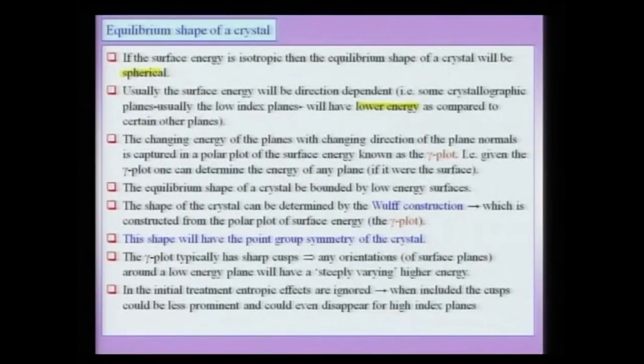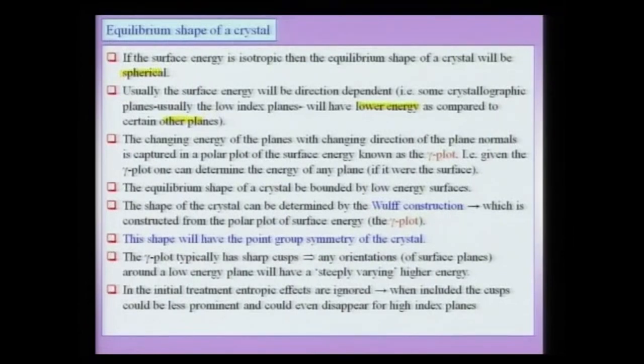To obtain the equilibrium shape, the crystal has to be annealed for long times and slowly go to its least energy state. In usual crystals, the surface energy is not isotropic — it is direction-dependent, depending on the kind of plane being put out. There will be certain planes of lower energy compared to others. This energy variation of planes with direction is captured in a polar plot of surface energy known as the gamma plot.